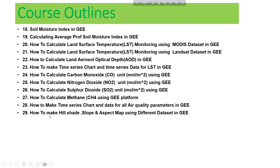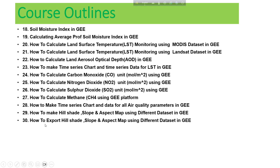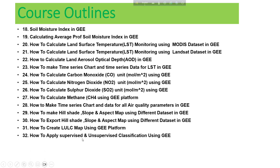We learn how to make hillshade, slope, and aspect maps using different digital elevation datasets in Google Earth Engine, such as NASA SRTM, ASTER DEM, and others available in the platform. We also learn how to export those hillshade, slope, and aspect maps. Additionally, we cover how to create Land Use Land Cover (LULC) classification maps using Google Earth Engine, including both supervised and unsupervised LULC classification.